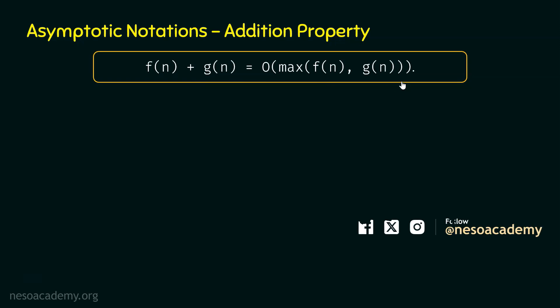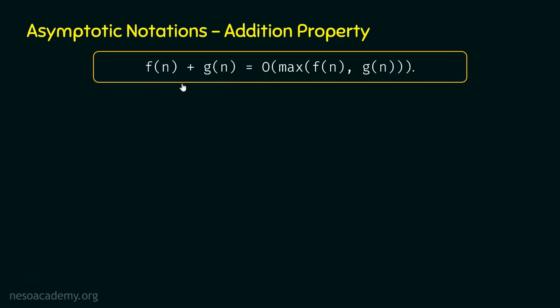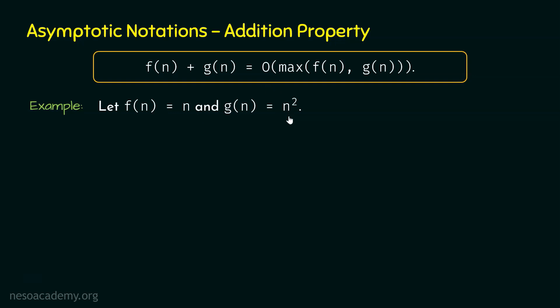This is the addition property of asymptotic notations: f(n) plus g(n) is O of maximum of f(n), g(n). Whatever is the maximum of these two functions will be considered as the big O of f(n) plus g(n). Let's try to understand this through an example. Let's say f(n) is n and g(n) is n square.